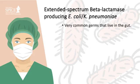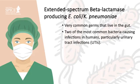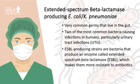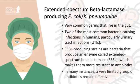E. coli are very common bacteria that normally live harmlessly in the gut and are one of the most common bacteria causing infections in humans, particularly urinary tract infections, or UTIs. These infections can sometimes progress to cause more serious infections, such as kidney infections, or spread to the blood, which can be life-threatening. ESBL-producing strains are bacteria that produce an enzyme called extended-spectrum beta-lactamase, which makes them more resistant to many commonly used antibiotics and makes the infections harder to treat. In many instances, only a very limited group of antibiotics remain effective against ESBL-producing E. coli.